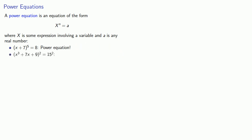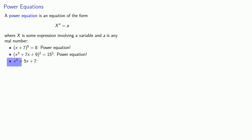Another example: x cubed plus seven x plus nine, quantity squared, equals fifteen squared. On the left-hand side we have something to a power, and on the right-hand side we have a real number, so this is a power equation. However, x cubed equals five x plus seven is not a power equation, because the right-hand side is not a real number.